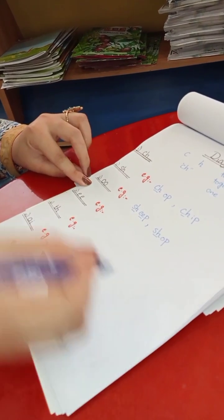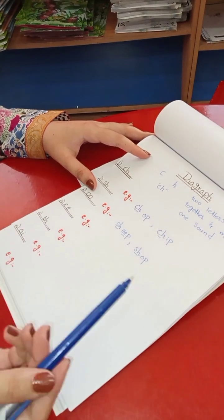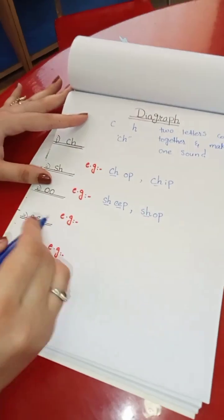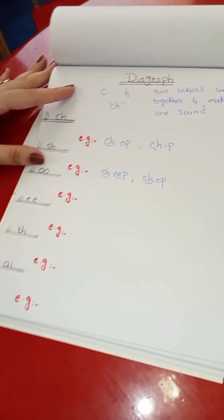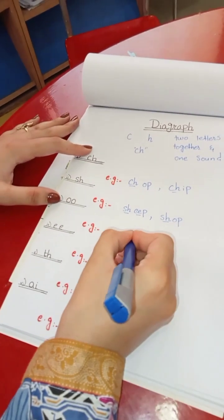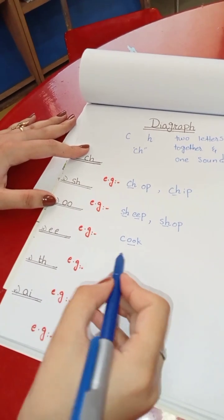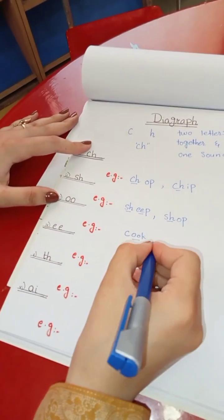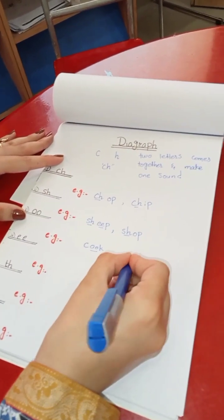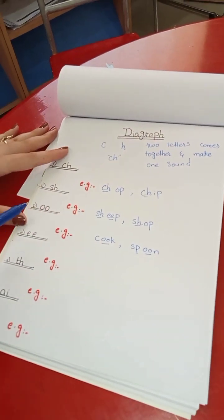The next digraph is OO. Two O's come together and make one sound called 'oo'. Let's learn the examples of OO. Like 'c-oo-k' — it will become 'cook'. And 's-p-oo-n' — it becomes 'spoon'. So this is digraph OO.